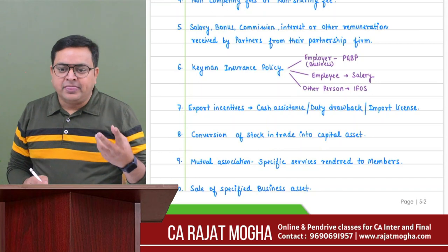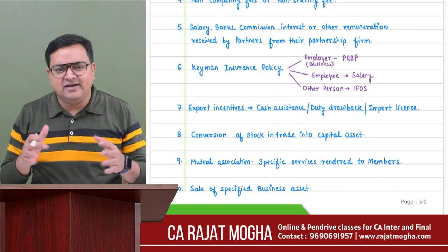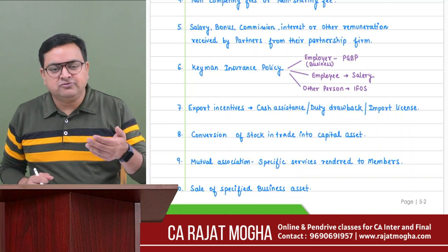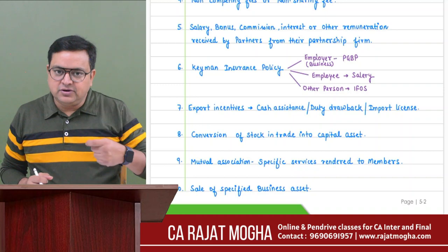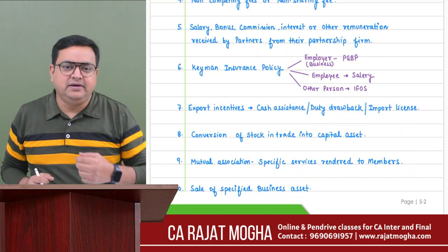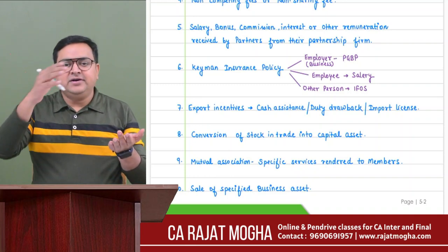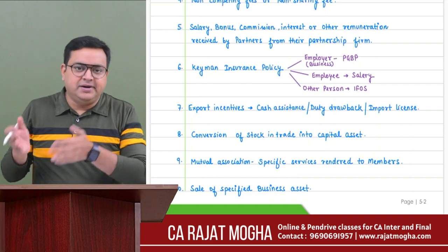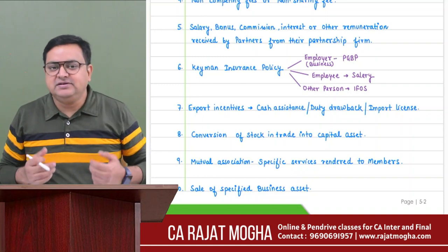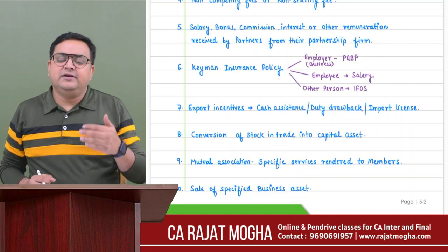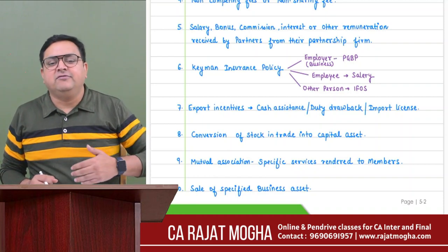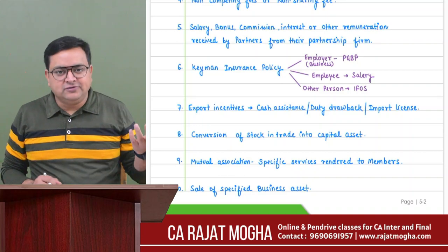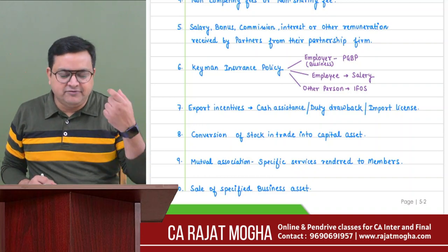Eighth: conversion of stock into capital asset. If you sell your stock, PGBP income arises. Similarly, if you convert your stock into a capital asset rather than selling it, PGBP income will again arise. The market value of the stock on the date of conversion is taken as the selling price and the original cost as the purchase price - the difference is the income. When capital assets are converted into stock, capital gain implications arise.